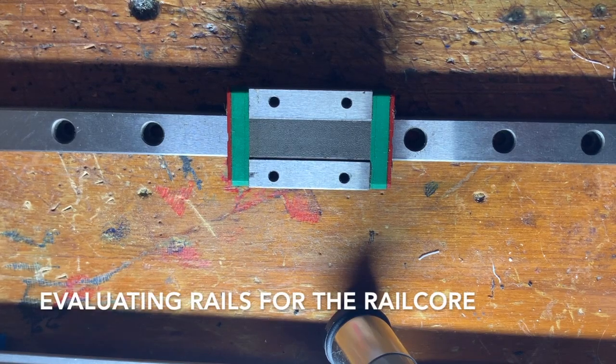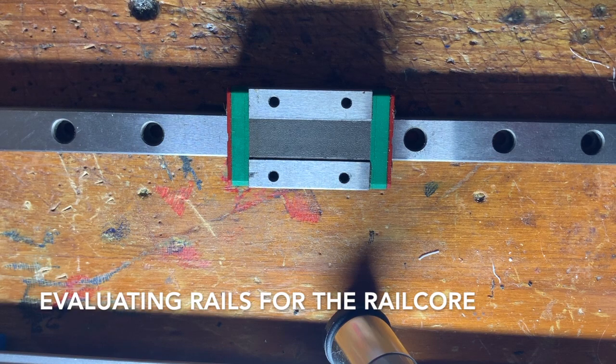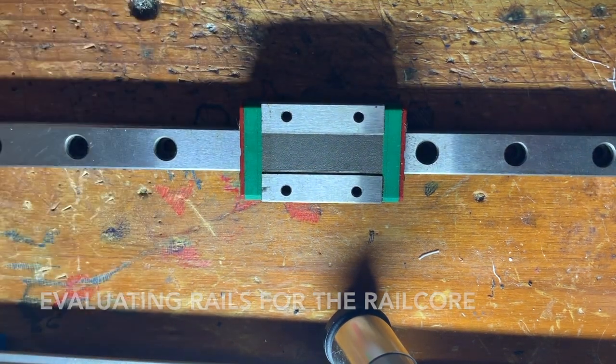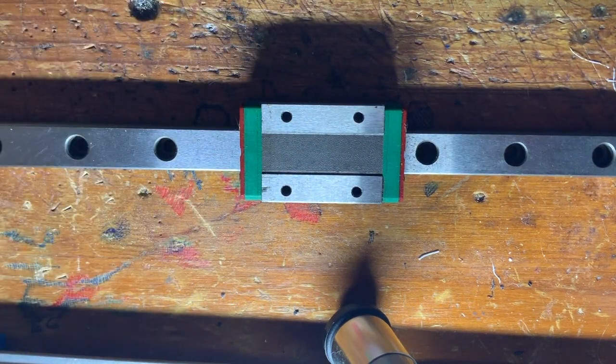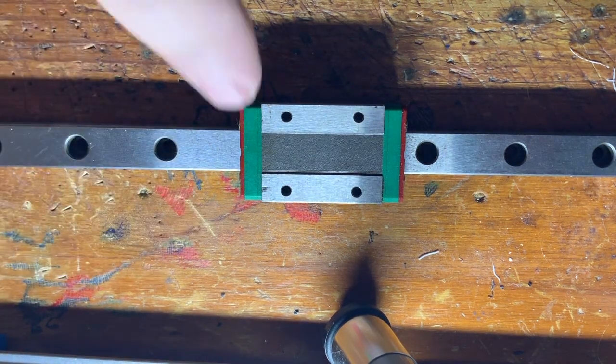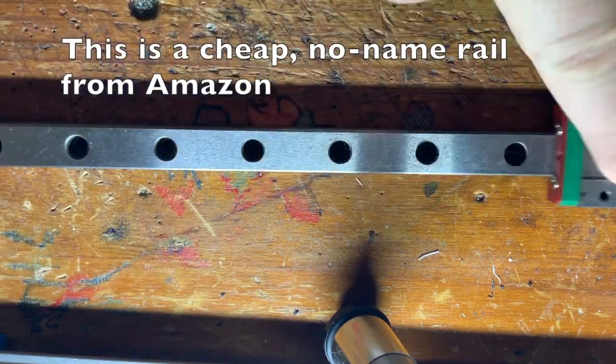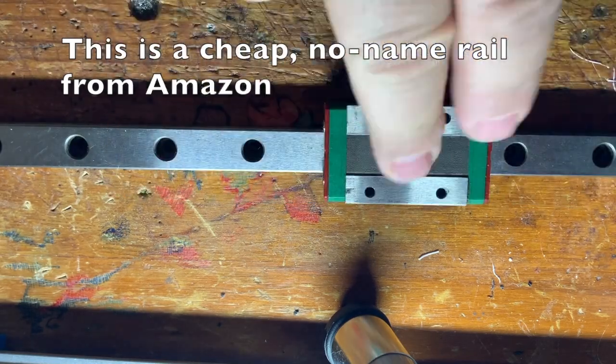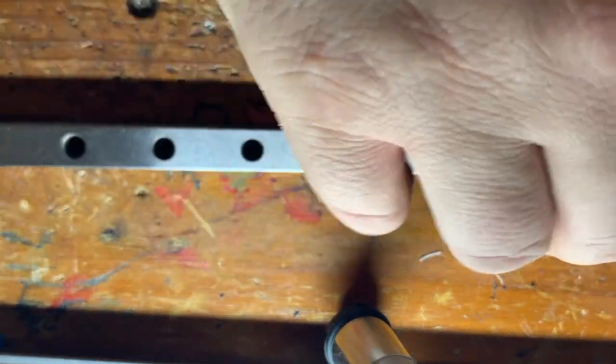Okay, so a lot of folks have been asking how do I check rails for the rail core. It's been a long road. They started out with rails that felt pretty good because most of your rails will feel—you do this and it feels pretty good. Now if you do that and it doesn't feel pretty good, you could send it back right away.